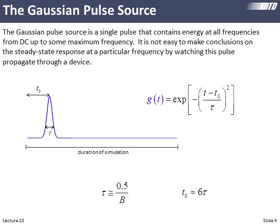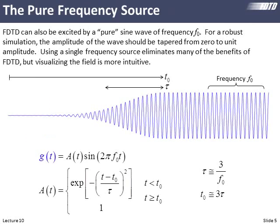Our Gaussian source had two properties controlling it: the duration of the pulse, which controlled its frequency content, and the offset, so we wouldn't begin in the middle of the pulse — we'd ease into the source and ease out of it. That theme of easing in and out is something we need to consider with a pure sine wave source. We don't want to just turn on the sine wave; we want to ease into it. So we'll use a Gaussian combined with a cosine or sine function.